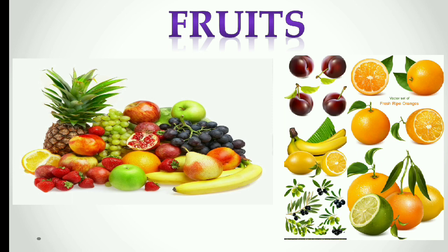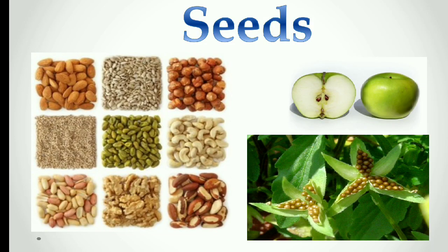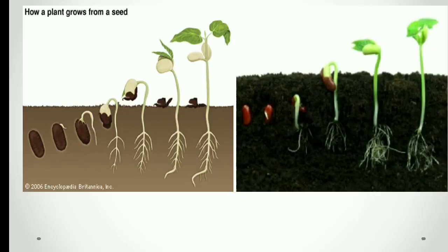Do you know where the plant grows from? Yes, the plant grows from a seed. So where are the seeds of a plant? Seeds hide inside the fruits. A seed becomes a sapling and the sapling becomes the plant.